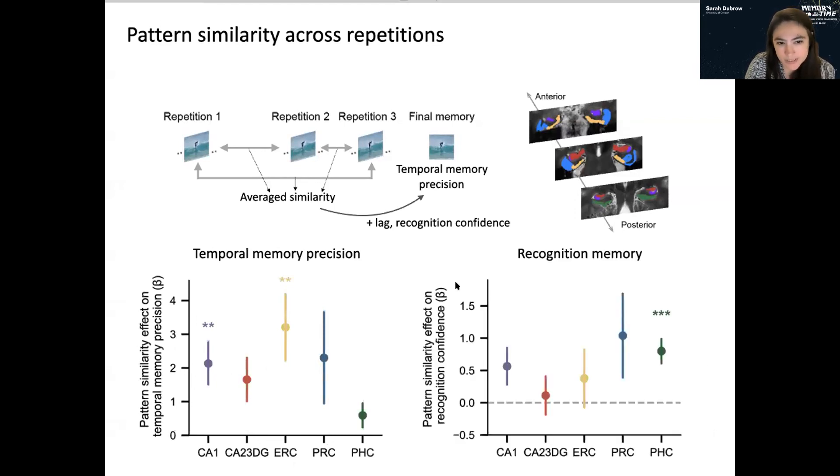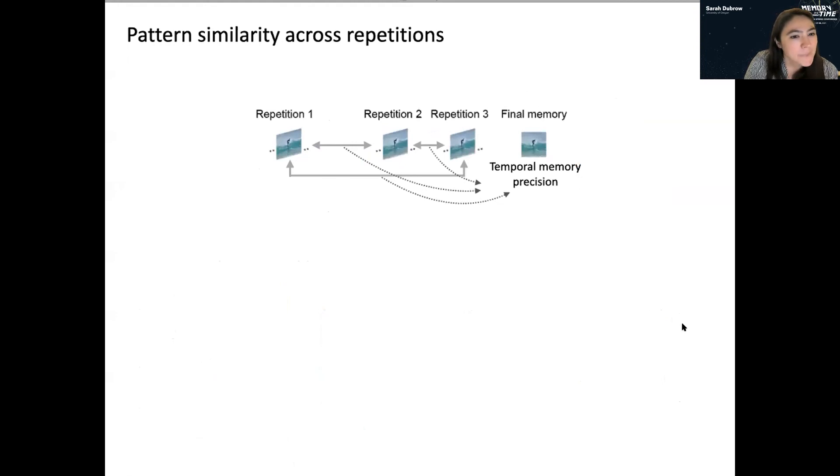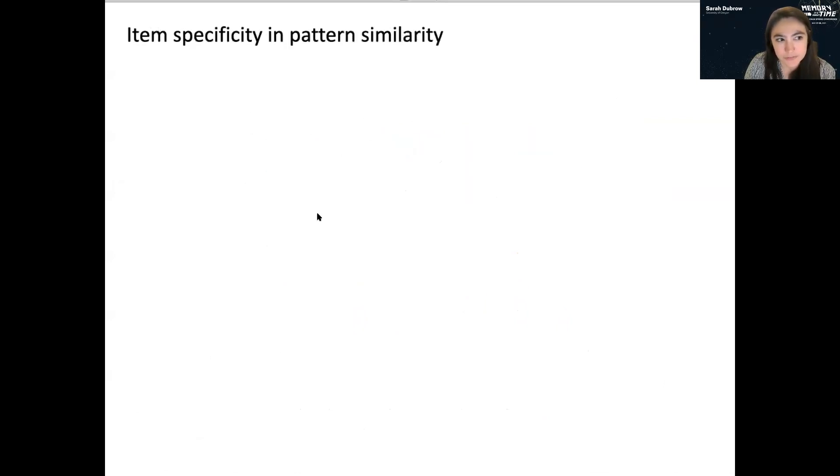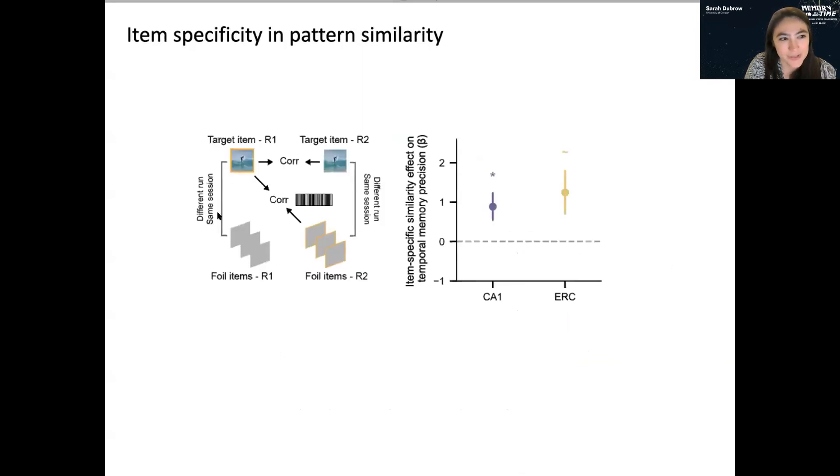Importantly, this is not what we see for recognition memory. So parahippocampal cortex is the only region that we see where pattern similarity predicts recognition memory. We can also break this down by repetition. And I'll just show this really quickly. The R1, R2 similarity seems to be driving this effect, which is consistent with the idea that you're kind of reinstating temporal information from the first repetition. And super quickly, this is item specific if we control for similarity between really well matched items. We still see a significant effect for CA1 predicting temporal memory precision and a marginal effect for entorhinal.